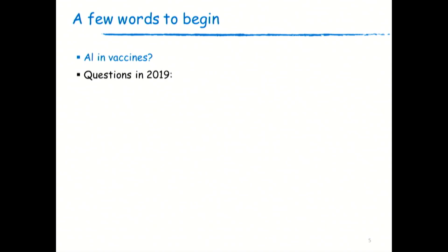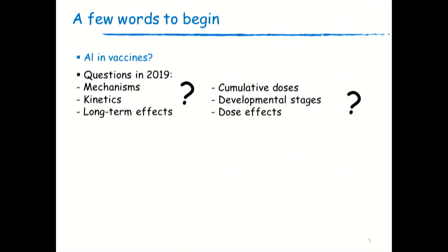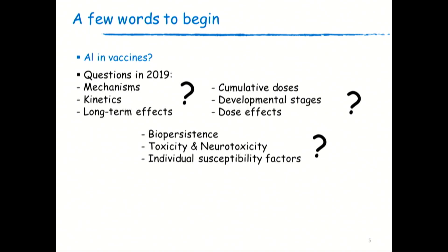Despite 90 years of use, we have many scientific questions right now in 2019 about mechanisms of action, about kinetics, about long-term effects of aluminum adjuvant exposure, and we don't know enough about the effect of cumulative doses. I'd really like to explore the effect of exposure during developmental stages — what happens when a developing organism, a developing brain, is exposed to aluminum salts. I'm not sure we understand the dose-effect relation well. We need to know more about bio-persistence, why it's sometimes more persistent in some individuals, and about toxicity, neurotoxicity, and individual susceptibility factors.